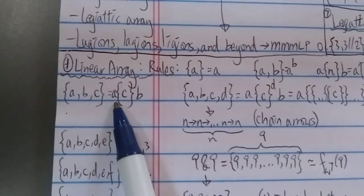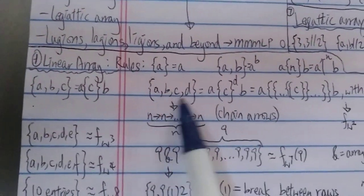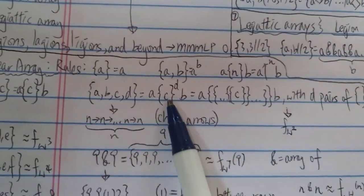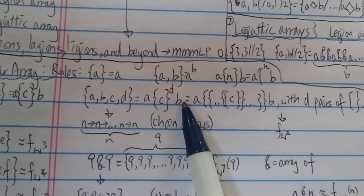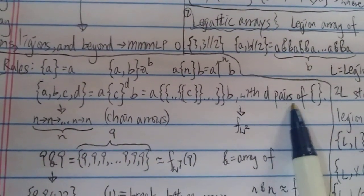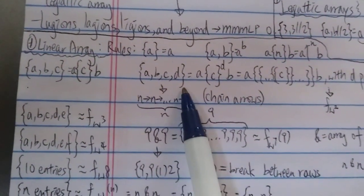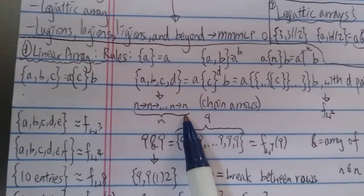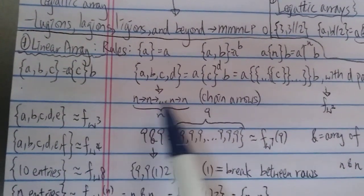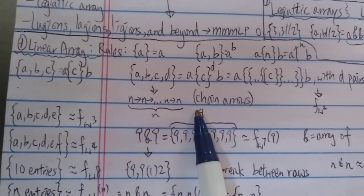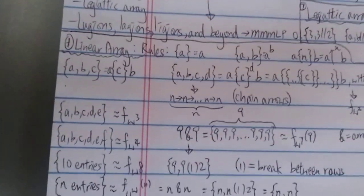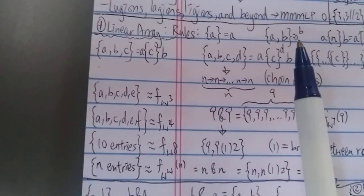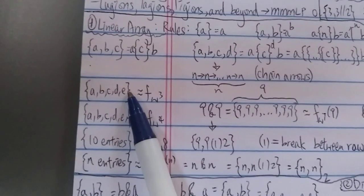{a,b,c} is equal to a bracket-c b, and the four-entry {a,b,c,d} is equal to a with d number of brackets and c, b — so it kind of looks like this with d pairs of brackets. Four-entry BEAF is already growing as fast as Conway chain arrow notation in the form n→n→...→n with n number of n's. This grows as fast as chain arrow, and this is still the linear array with only four entries.